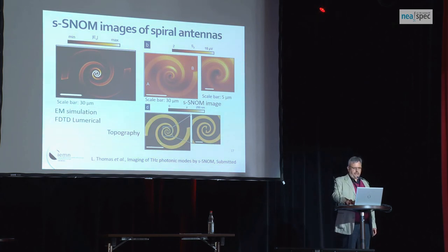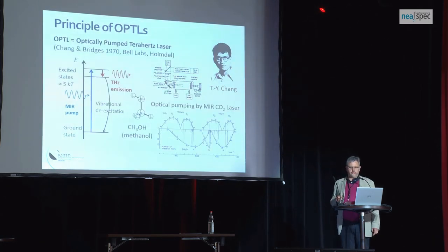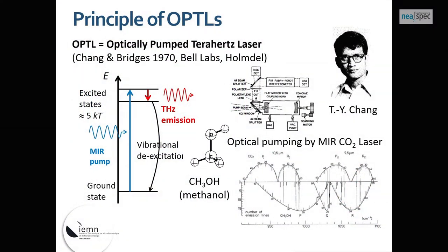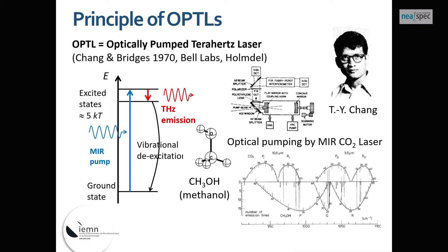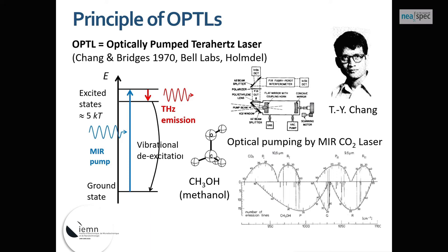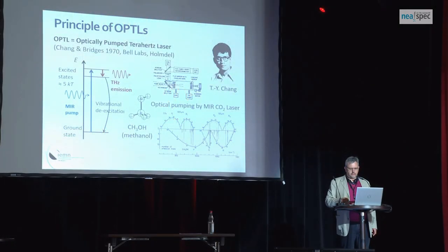We used a gas laser for these experiments. This type of laser dates back to the 1970s, invented at Bell Labs. Using a molecule such as methanol, you pump a molecular vibration and create population inversion between excited states, yielding THz emission in a cavity. These lasers are quite powerful since the CO2 pump is powerful, but you must find molecules that absorb exactly where the CO2 laser emits. Changing frequency typically requires changing the gas, making it complicated to access multiple frequencies.